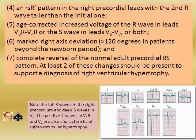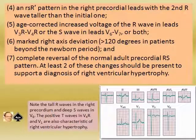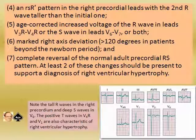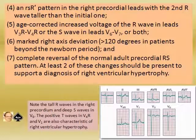Point number four is an RSR' pattern in the right precordial lead with the second R wave taller than the initial one — that is, small r, S, capital R'. Point number five is age-corrected increased voltage of the R wave in lead V3R, V4R, or the S wave in lead V6, V7, or both.